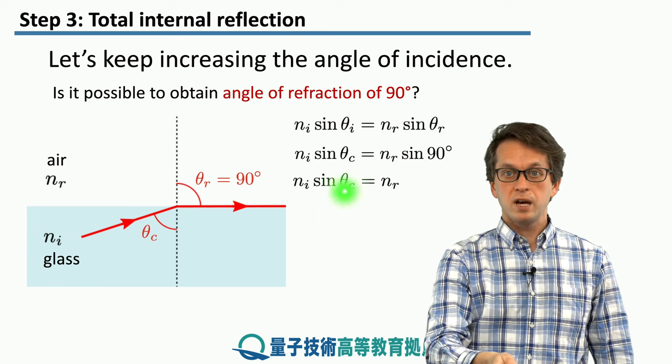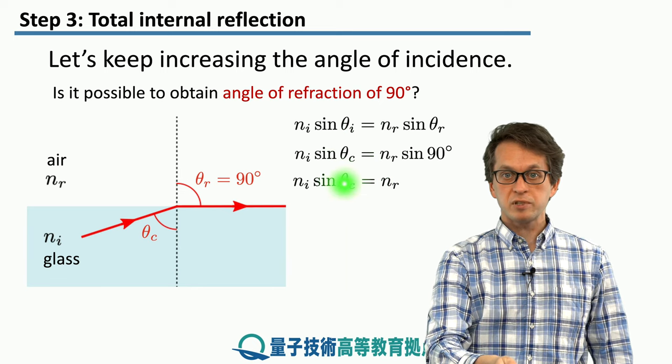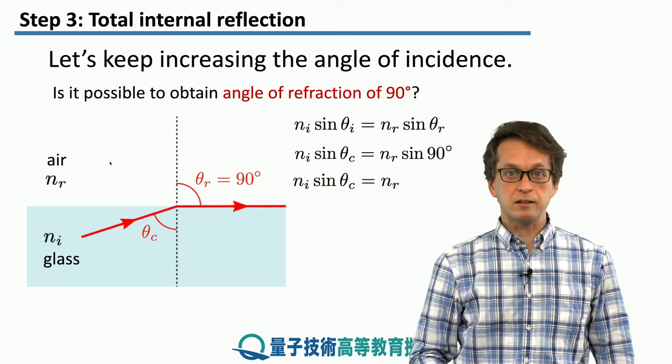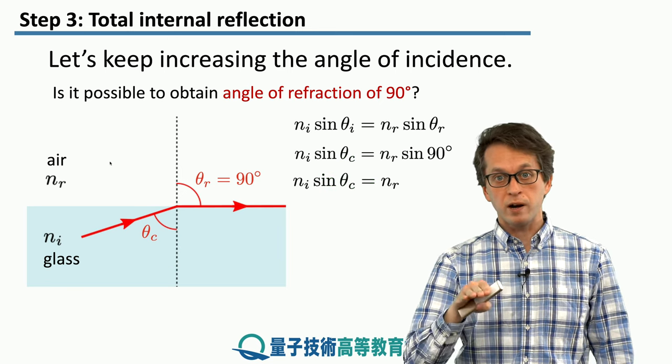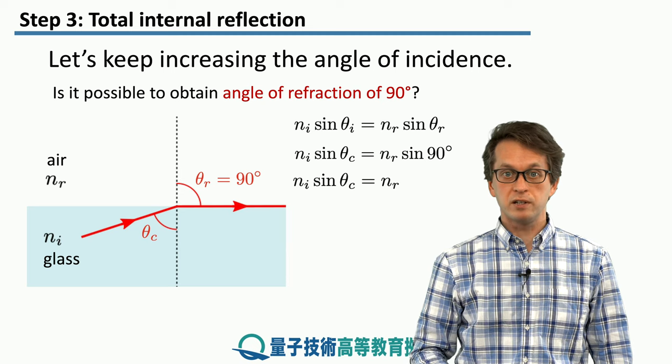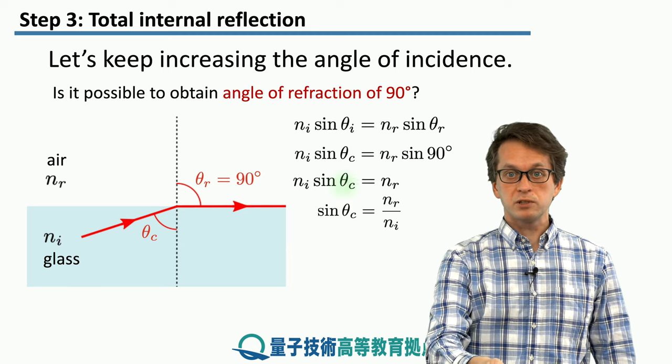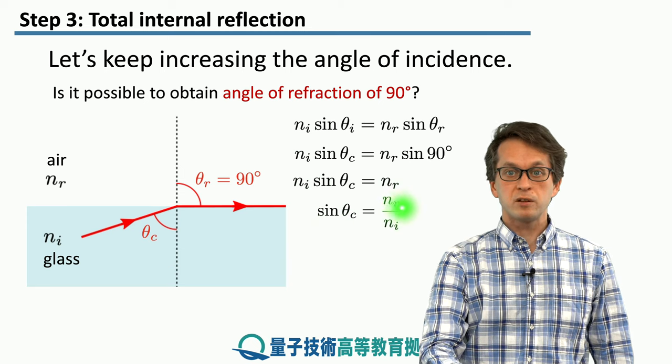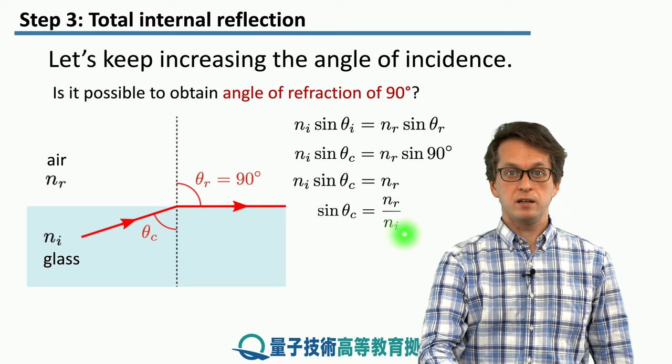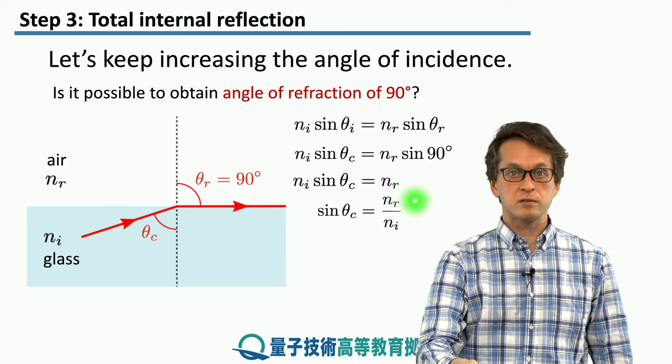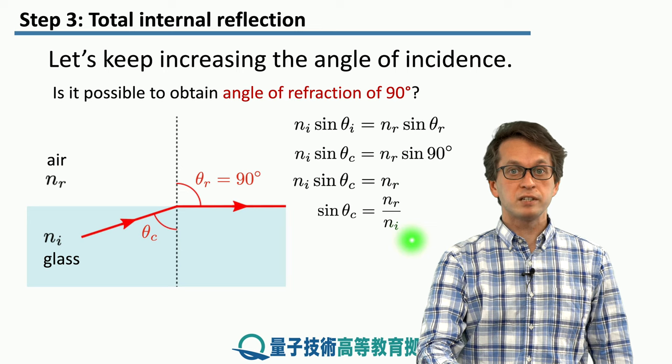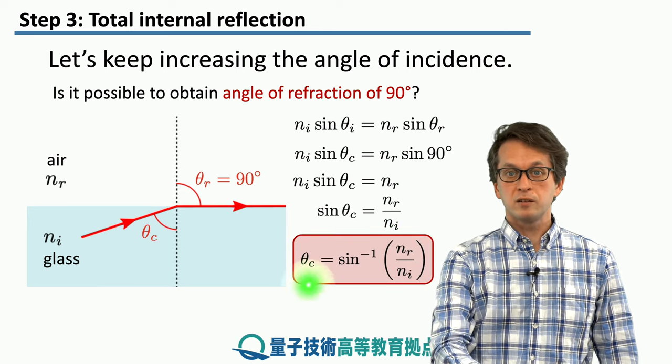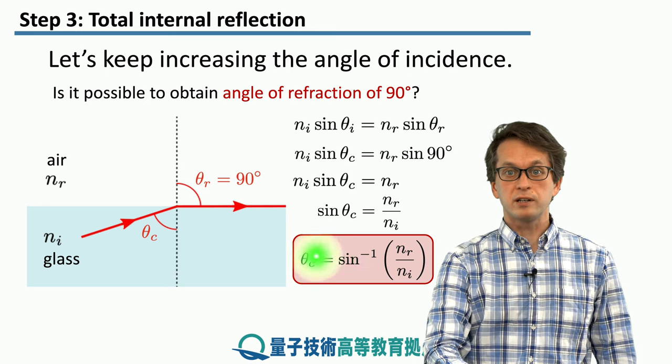So we have the following relationship, and we have changed the subscript here on this theta to theta c, which stands for critical angle. Because that's the critical angle where we obtain angle of refraction of 90 degrees. Now we can just rearrange to get sine of theta c equal to a simple fraction of nr over ni. In our case here, nr is the refractive index of air, and ni is the refractive index of glass. And we can just take the arc sine to obtain this expression for the critical angle.